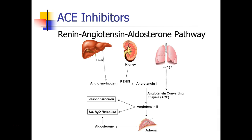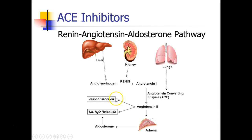So we want to keep this pathway in mind as we start learning about ACE inhibitors — angiotensin-converting enzyme inhibitors — which act at this spot right here in the conversion from angiotensin-1 to angiotensin-2. By blocking this enzyme, we have a deficit of angiotensin-2 and aldosterone, and therefore patients should vasodilate and secrete sodium and water, and these should both act as a diuretic and to lower blood pressure.